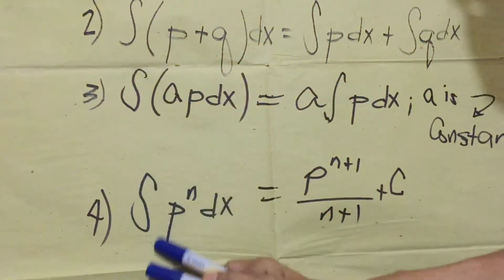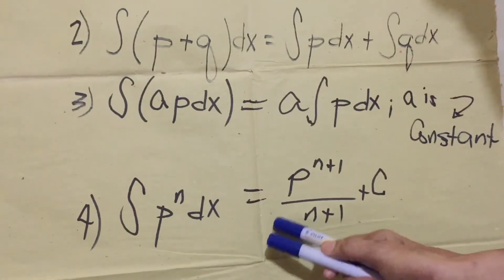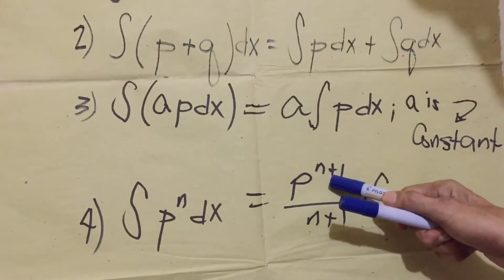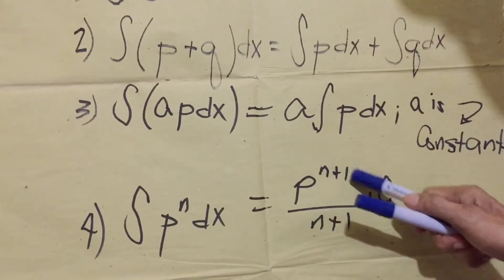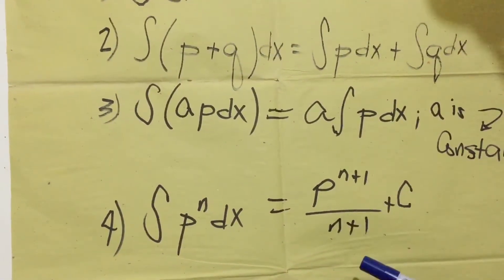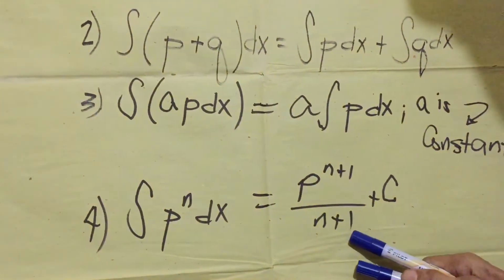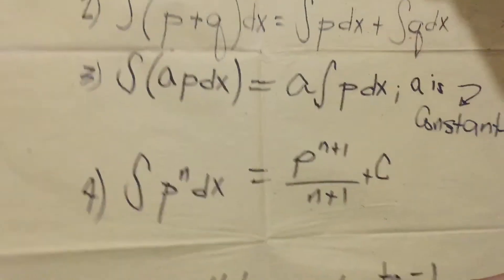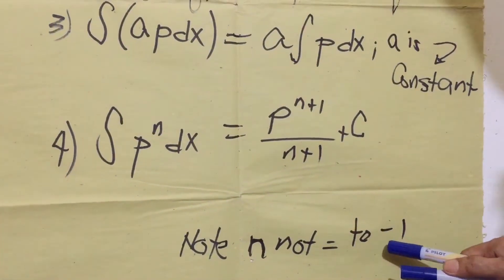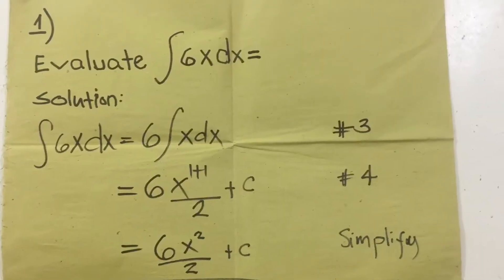Number four, we have integral P to the n dx equals P to the n plus one over n plus one plus c constant. In integration, we have to plus one to every exponent of a variable. Take note that n not equal to negative one.